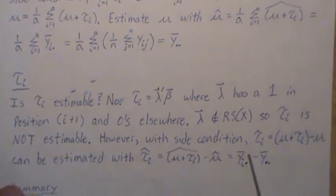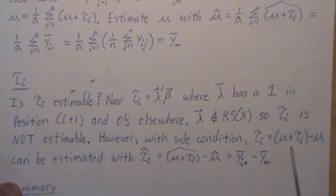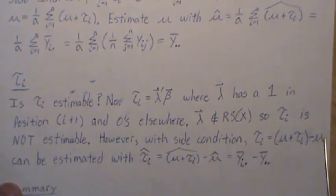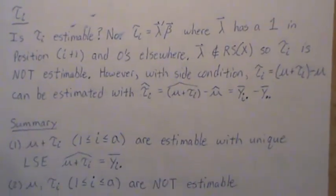However, with the side condition, you can think of τᵢ as this. But this is estimable. And with the side condition, μ is estimable. So we'd estimate τᵢ with these two estimates. But those two estimates are this. So it's the ith treatment mean and the overall sample grand mean.